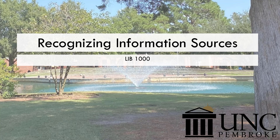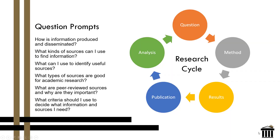Hello, everybody. Welcome to Lib1000 Online. This presentation is going to talk about recognizing information sources. Today we're going to be looking at the research cycle and specifically how different pieces of information are produced and disseminated based on the topic that you're looking at. This will play into what kind of sources you can use, how you can identify them, and which types of sources are good for your academic research.